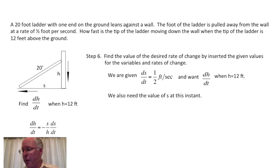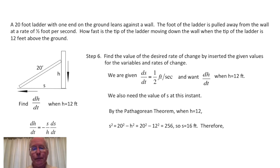To do this, we know that ds/dt is one half foot per second. That's easy. And we want to find the rate of change when h equals 12 feet. We also need the value of s at this instant. And this comes from the Pythagorean Theorem. When h equals 12, at that instant, we have s squared is 20 squared minus h squared equals 20 squared minus 12 squared, which is 256. Taking square roots, s equals 16 feet.